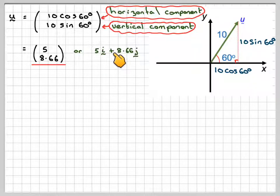Now there's another way of writing a column vector, which is like this. We have 5i plus 8.66j. i is like a unit vector in the horizontal direction, and j is a unit vector in the vertical direction. What we mean by unit vector is a unit of one length. So we've got 5 times i plus 8.66 times j. That's just a different way of writing it.